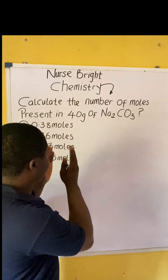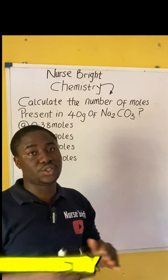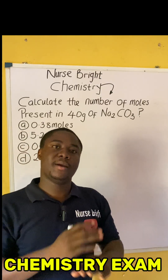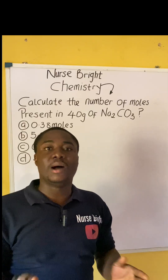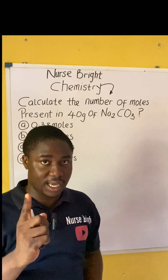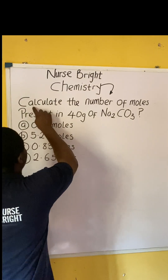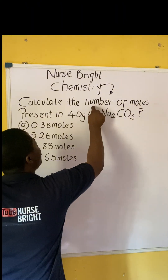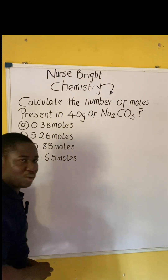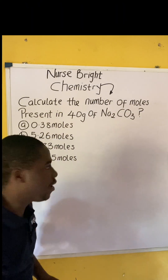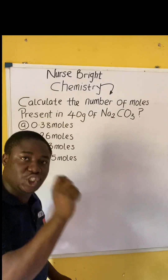You came across this question in your chemistry exam. How will you solve it? It is very easy. Let's solve together. The question says: calculate the number of moles present in 40 grams.